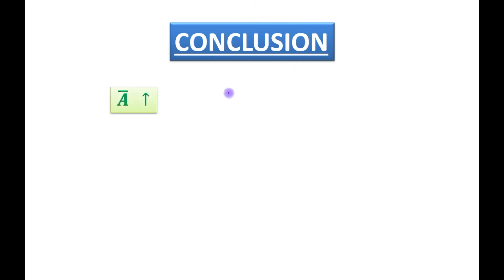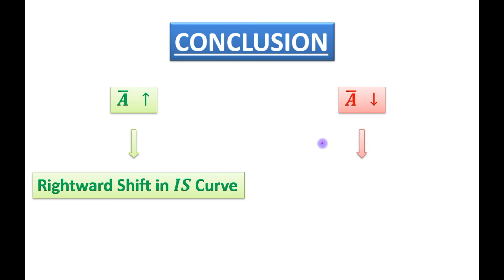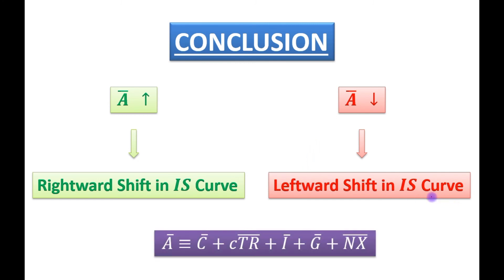Conclusion. If A bar increases, then there will be rightward shift in IS curve. And if A bar decreases, then there will be leftward shift in IS curve where A bar is identically equal to autonomous consumption plus MPC times transfers plus autonomous investment government expenditure and net exports.